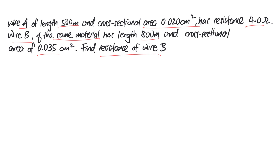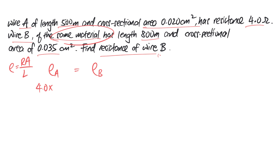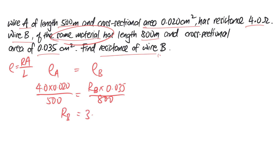I prefer you to work this way: because they are of the same material, the resistivity of wire A must equal the resistivity of wire B, and you do it in this format. We know that resistivity equals resistance times cross-sectional area over length. So for wire A: resistance is 4.0, cross-sectional area is 0.020, and length is 500. On the other side, resistance of B is what you want to find, times cross-sectional area 0.035, divided by 800 meters. This is simple math — press it into a calculator and you get 3.7 ohms.